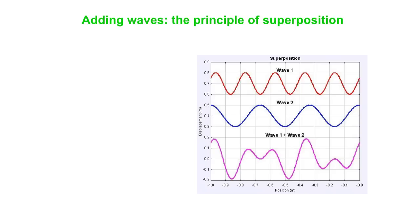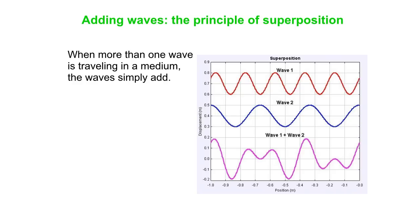The first thing we need to talk about is what happens when you add waves. This is called the principle of superposition. In the picture, you see wave 1 and wave 2, and they combine on a string into wave 1 plus wave 2 — you simply add them together. You take the displacement from one wave at a particular point and combine it with the displacement from the other wave at that point. That gives you the net displacement of the medium at that point, and you do that point by point.